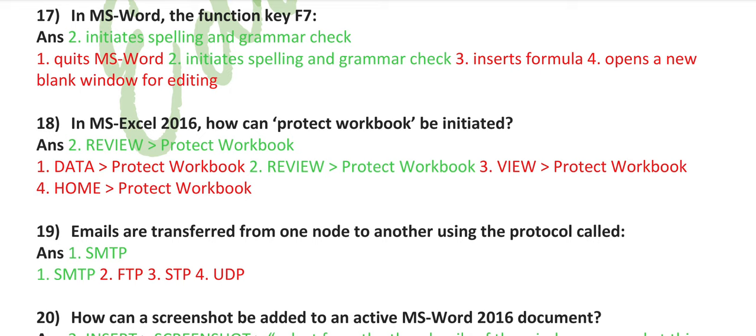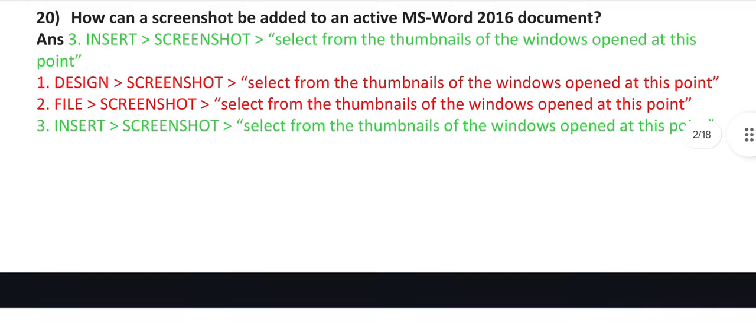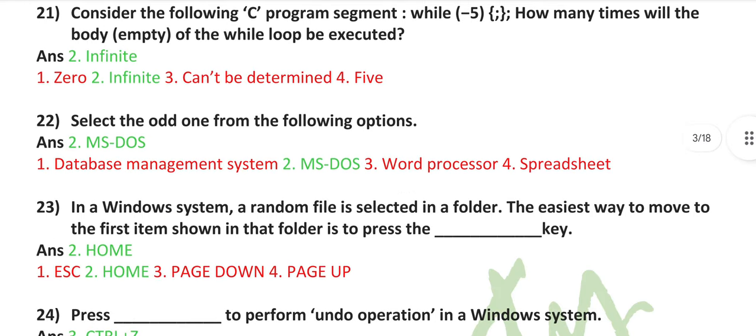In MS Excel 2016, how can protect workbook be initiated? Review, then go to protect workbook. Emails are transferred from one node to another using the protocol called SMTP. How can a screenshot be added on an MS Word 2016 document? Insert, then go to screenshot, then select from thumbnails of the windows open at this point. Consider the following: while bracket minus 5 semicolon, how many times will the body of the while loop be executed? Infinite.